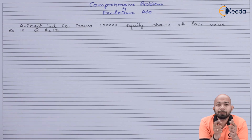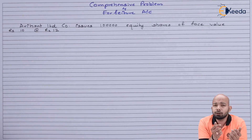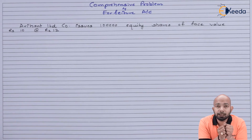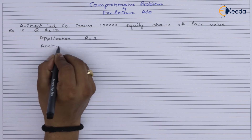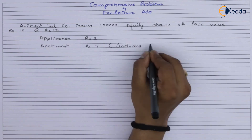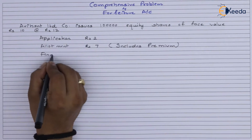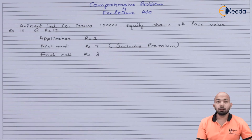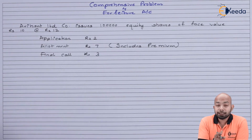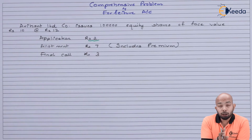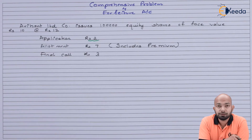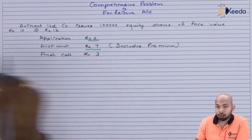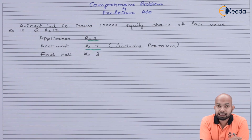This is payable as follows — application, allotment, first and final call. On application they're taking ₹2. On allotment they're taking ₹7, which includes the premium of ₹2, meaning allotment capital will be ₹5. And on the final call they're taking ₹3.